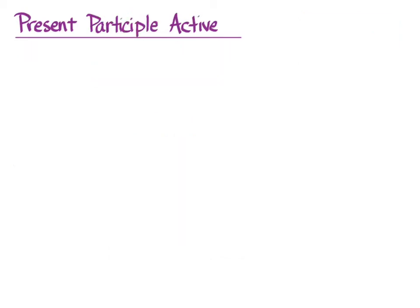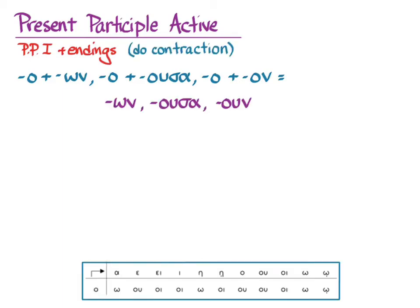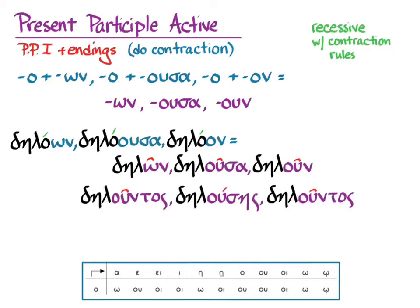Now we need to do participles. First principal part and the endings we know: omicron plus ōn, ousa, on — after contraction, becomes ōn, ousa, oun. So with delao you get dēlōn, dēlousa, dēloun. Recessive accent with contraction rules: the accent persistently follows the masculine nominative singular, so it stays on the omicron contraction all the way through all three genders of the nominative. The genitive singulars are dēlountos, dēlousēs, dēlountos, giving stems dēlount-, dēlous-, and dēlount- for the rest of the participle declension.